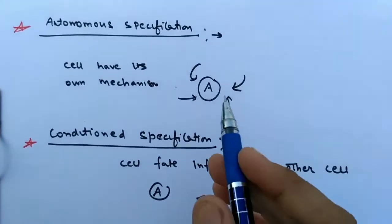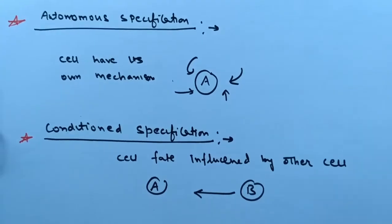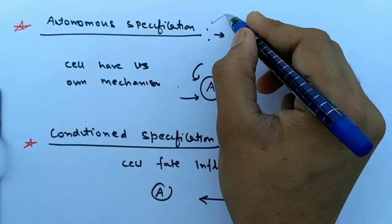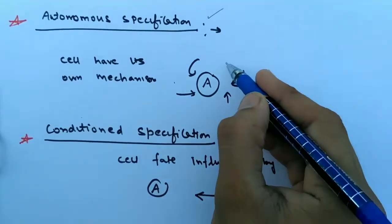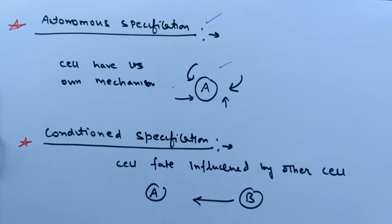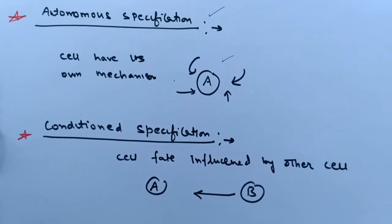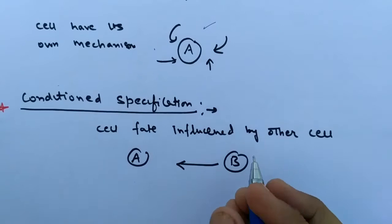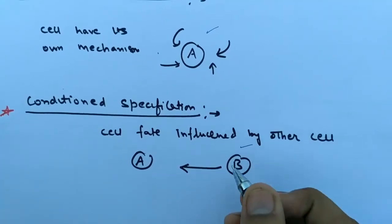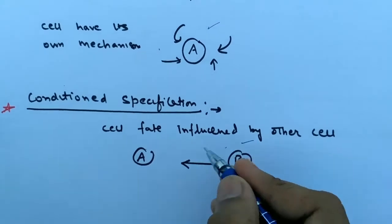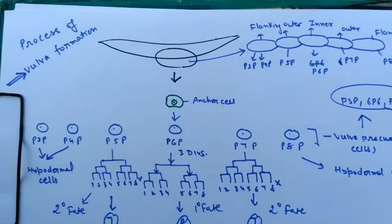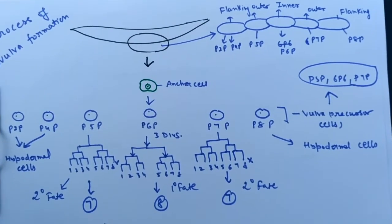Next is specification. Specification occurs by two phenomena. The specified cell gets specified by two mechanisms. First is autonomous, where the cell has its own control mechanism and controls its growth and development by its own mechanism. The conditional specification: the cell is controlled by the presence of other cells, where an inducer chemical is sent to the cell and its functioning is affected. This is the actual process of vulva formation.